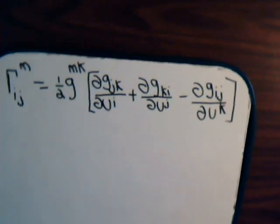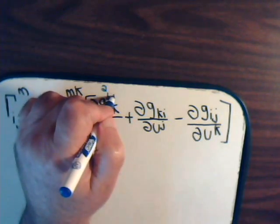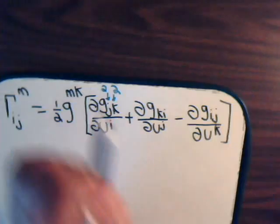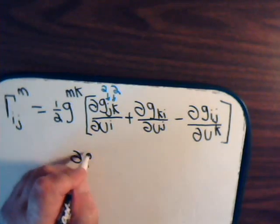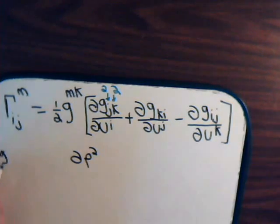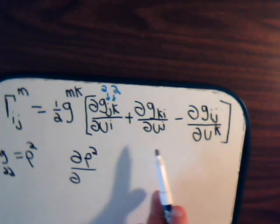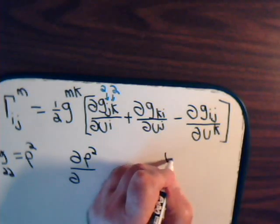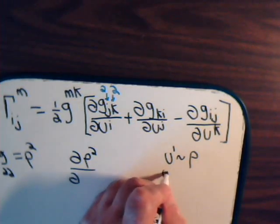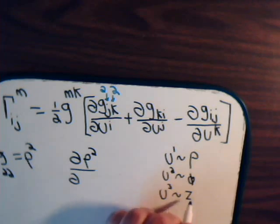So, let's consider, we know then that this has to be 2, and this has to be 2. Now, we're taking the partial of rho squared. That's what g22 is. But with respect to what? Here we have ui, uj, uk, where i, or j, or k can be 1, 2, or 3. Well, we know u1 corresponds to rho, u2 corresponds to psi, and u3 corresponds to z.